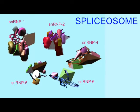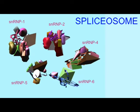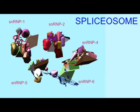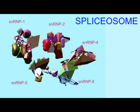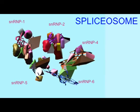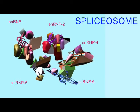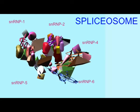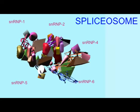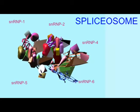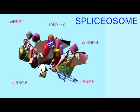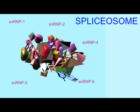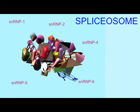These five snRNPs associate to form the spliceosome, a complex structure made of these five snRNAs and hundreds of proteins. It is this structure which removes introns in RNA processing. A nucleus may possess more than 100,000 spliceosomes, which may remove 200,000 introns.